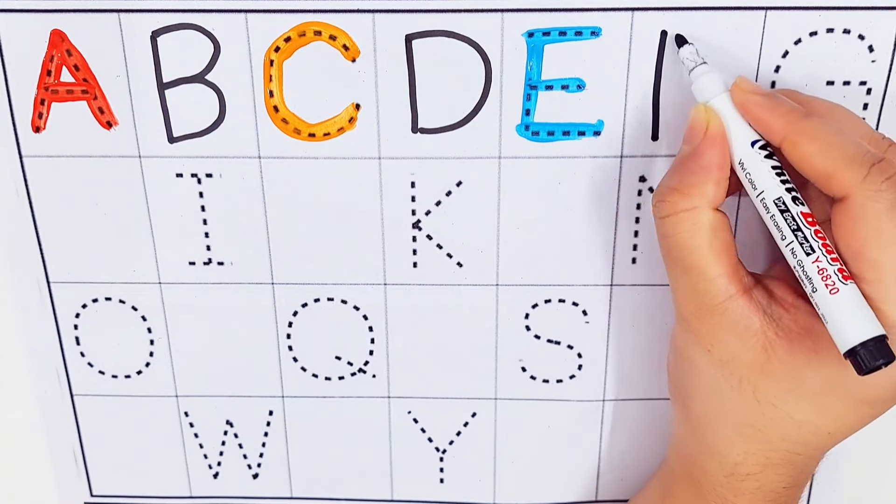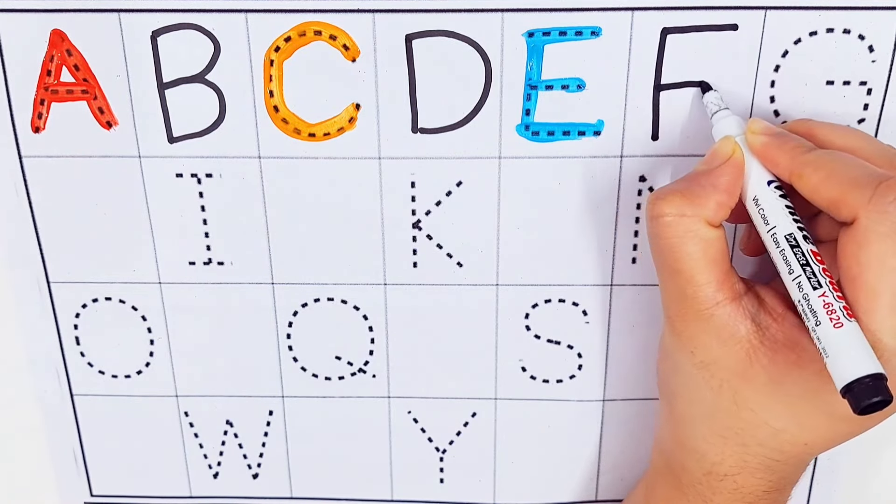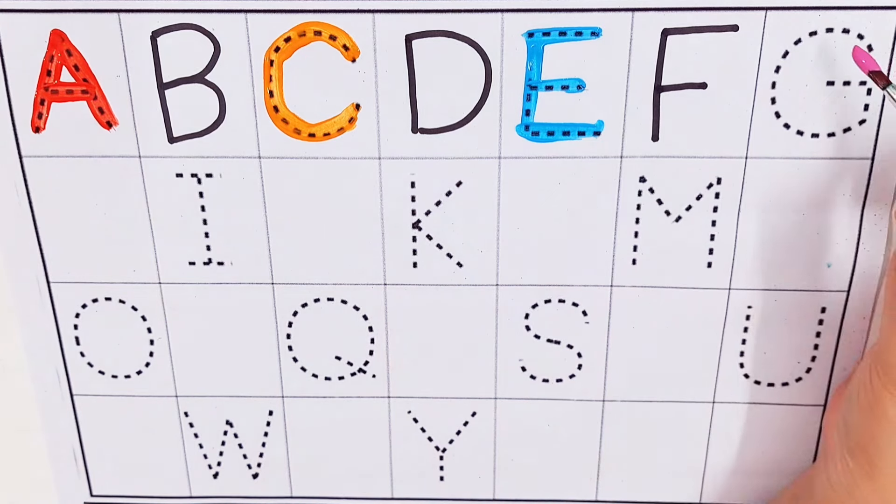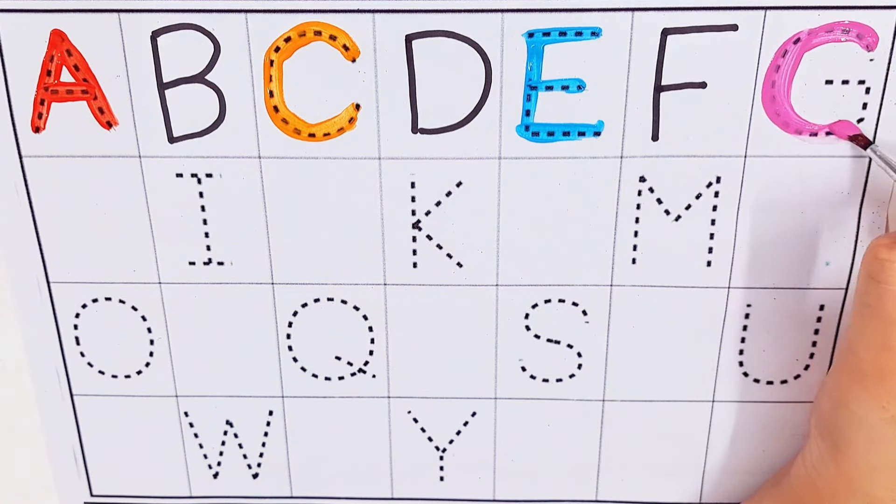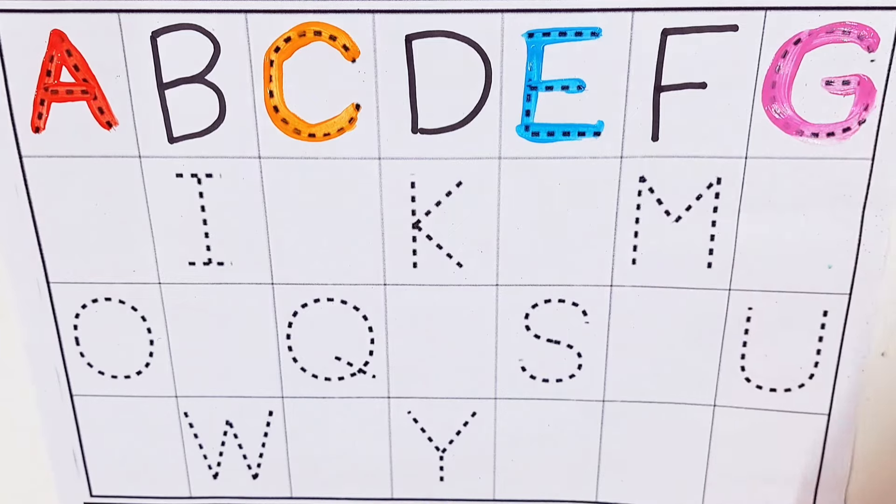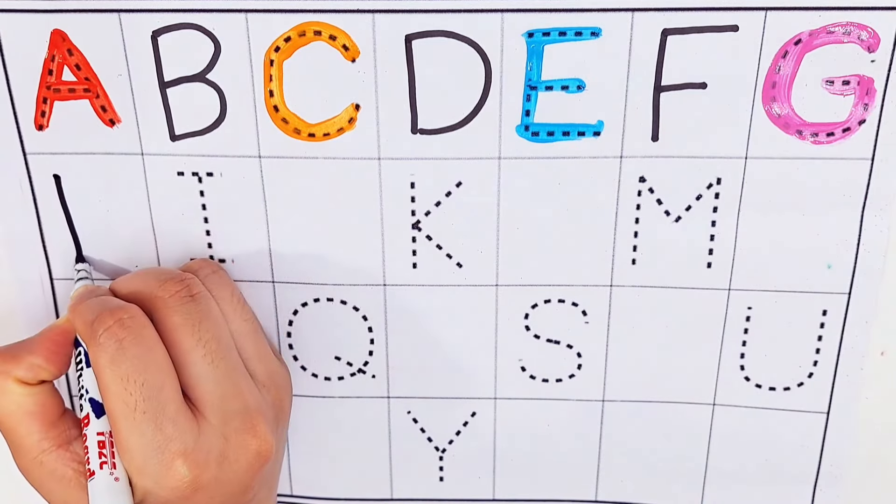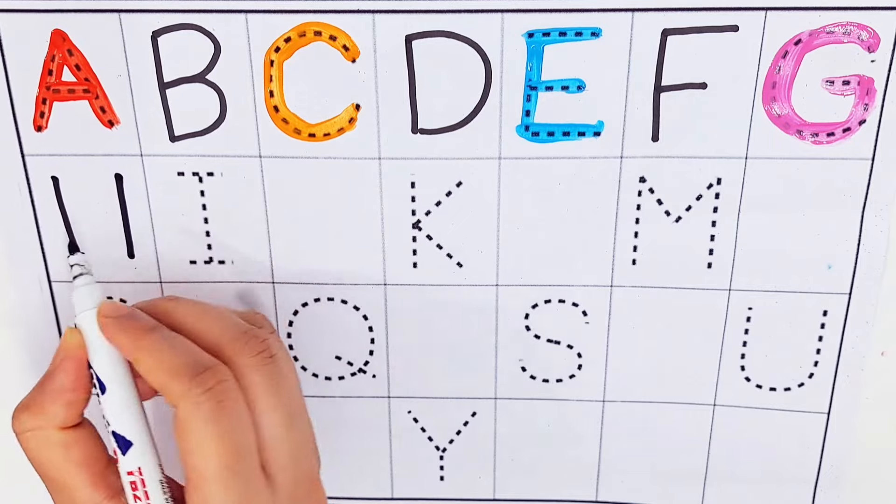F. F for Fish. G. G for Goat. H. H for House.